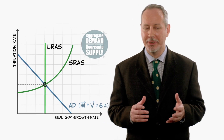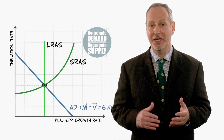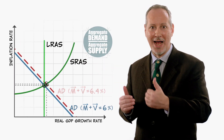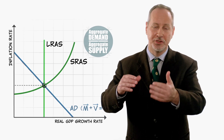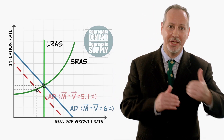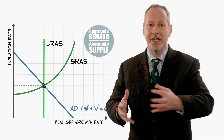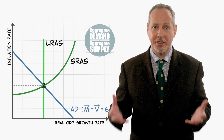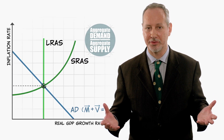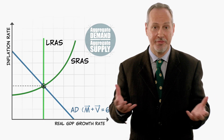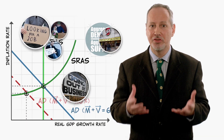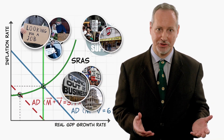Now, even though changes in V are always temporary — an increase in V shifts the AD curve out and then back, a decrease in V shifts the AD curve in and then back — even though these changes are temporary, they can still cause business fluctuations. And if the changes are big and very negative, they can even create a recession.